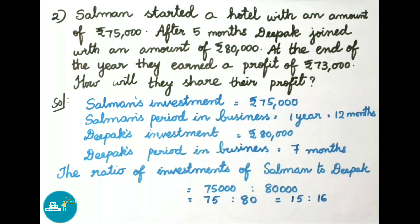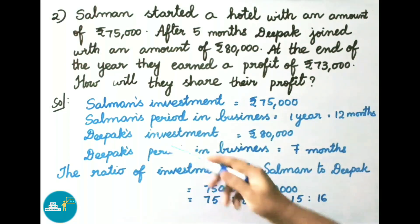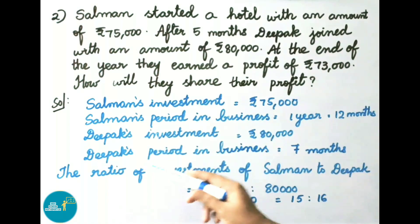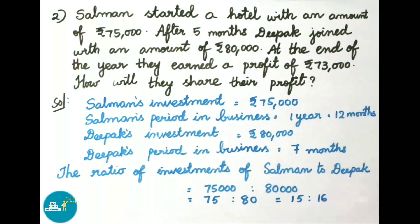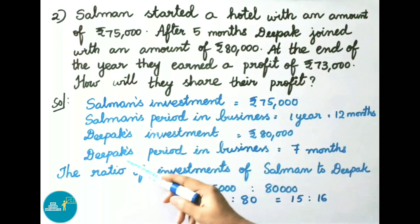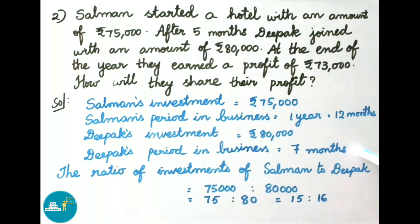Let us see the solution. Salman's investment is 75,000 rupees and Salman's period in business is 1 year, that equals to 12 months. Deepak's investment is 80,000 rupees. Deepak joined after 5 months, so his period in business is 12 minus 5, that is 7 months.